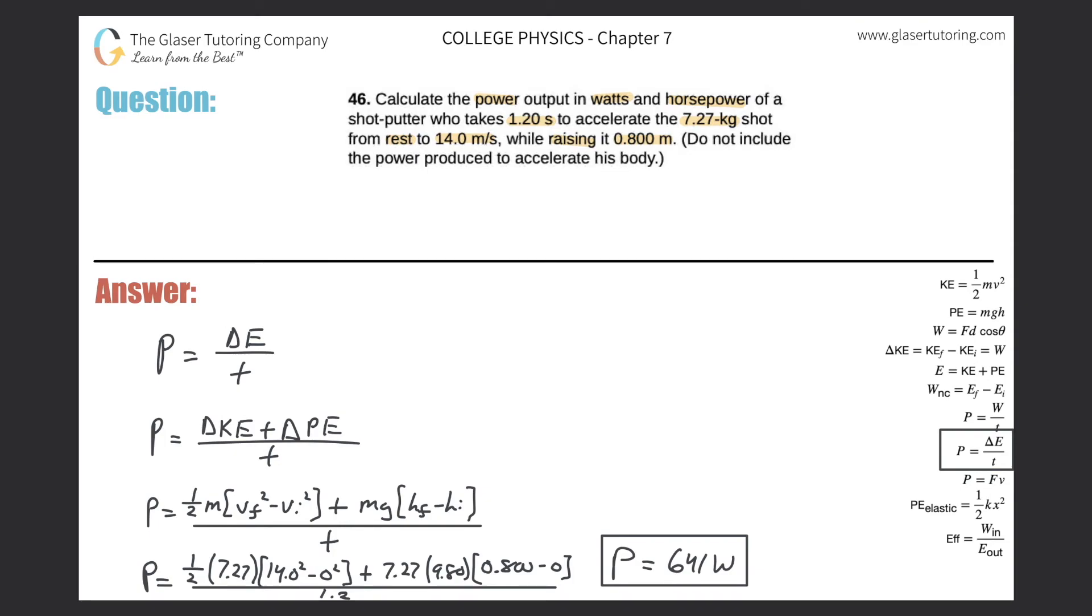Now they wanted to know horsepower, so simple conversion. Start with writing the watts, 641 watts. We have to know the relationship between watts and horsepower, namely that for every one horsepower, it's 746 watts. So we get a value of about 0.859 horsepower, and that would be the final answer.